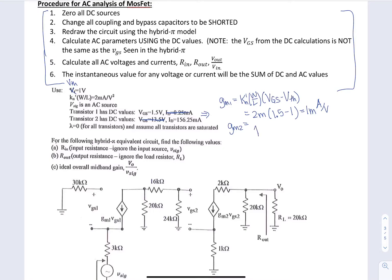And the equation here is two KN prime W over L ID. And that's the square root. So it's the square root of two times two milli. And then ID is 156.25 milli. And so this gives us a value of 25 milli amp per volt. So these are our two parameter values that we need to solve this circuit.